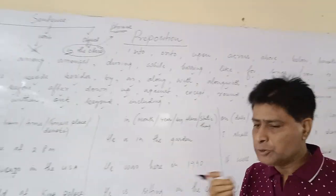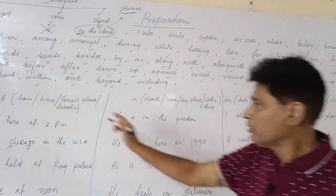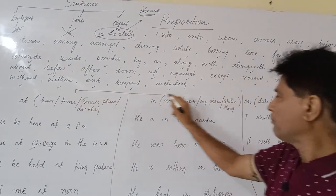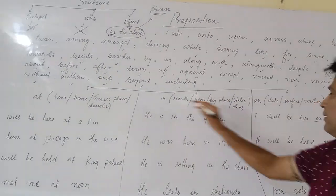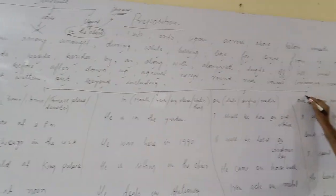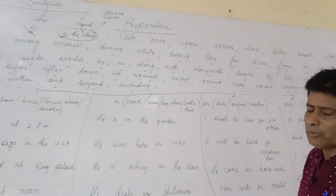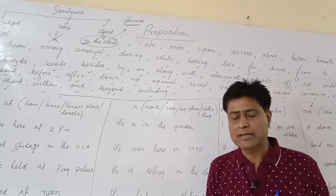Well friends, let me teach you today with these four confused prepositions. These are at, in, on, and over. We make so many mistakes at the time of making sentences.